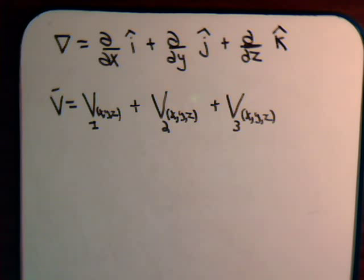In this video we're going to derive yet another way of expressing Green's Theorem in vector notation. First we have to discuss what we mean by the divergence of a vector.